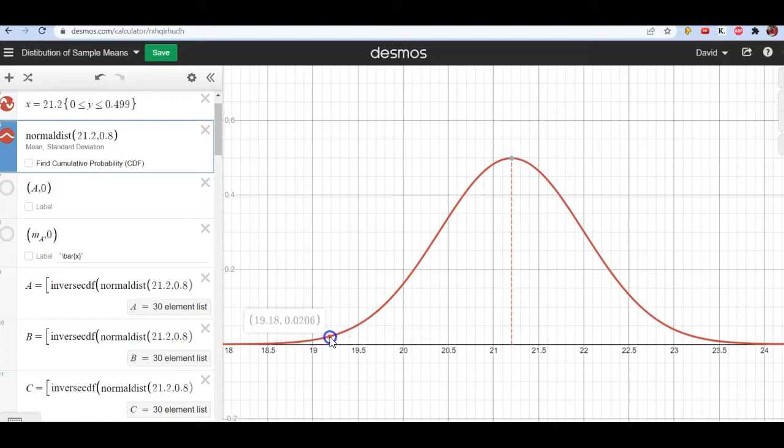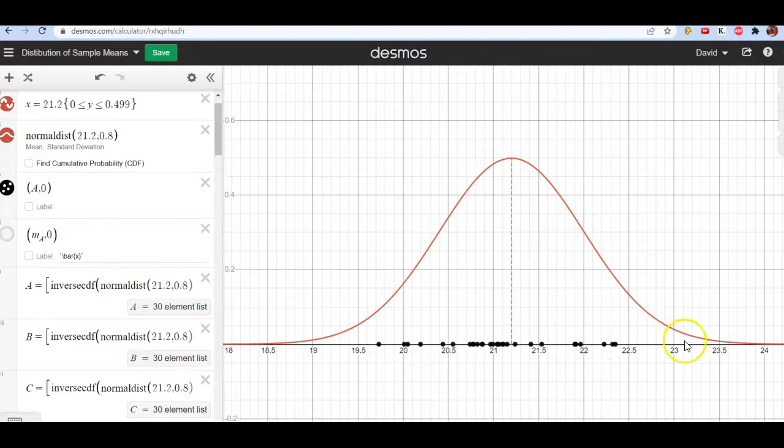But because it's random, we could get values way down here or way up here. It's possible, but just like a histogram, the heights are a measure of how likely it is to see values in there. So it's much more likely to see values in this range than in the tail. I'm going to click this first box. And it's going to give some points. These are just points chosen at random, the 30 elements in this list, and they're clustering around the peak where the peak is.